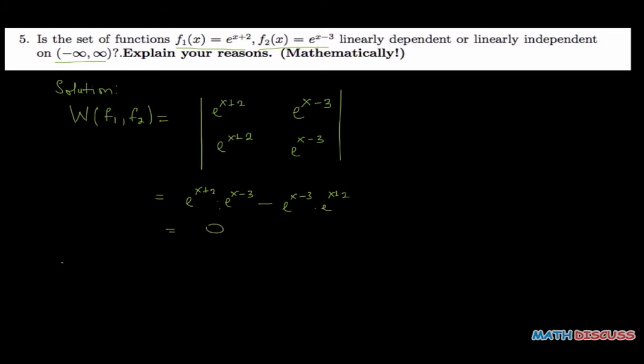Since the Wronskian is 0, it implies that f1 and f2 are linearly dependent. And that completes that.